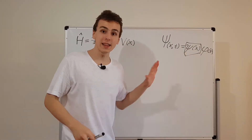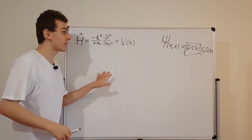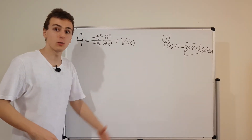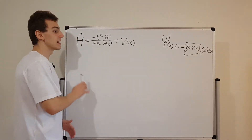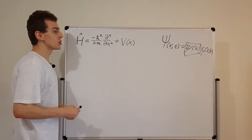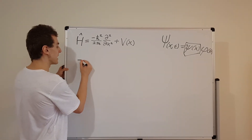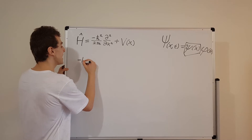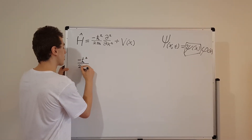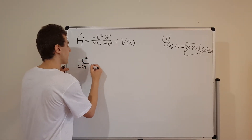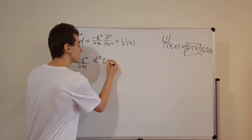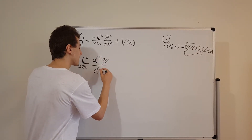Make sure you watch that video on separation of variables where we solve the Schrödinger equation, and then this next step is going to make a lot more sense. So we have a term that's related to the kinetic energy — it's got a minus h-bar squared over 2m, then we've got a second derivative of psi with respect to x.